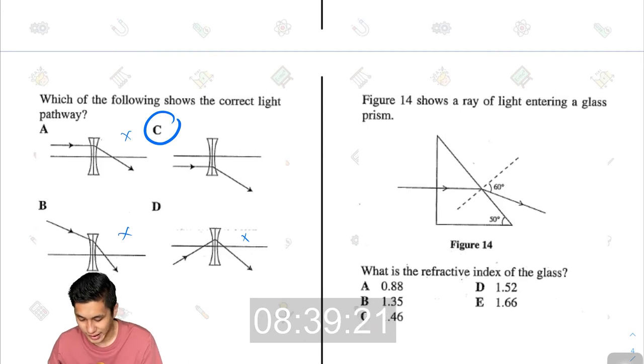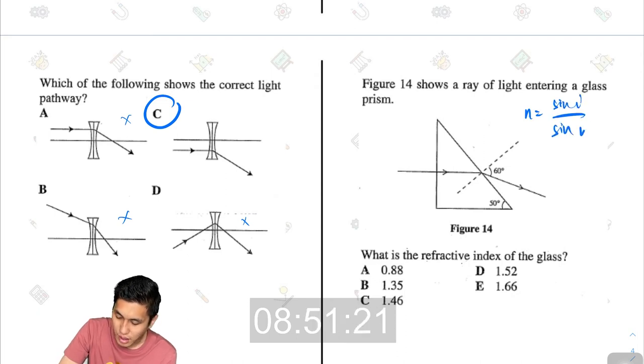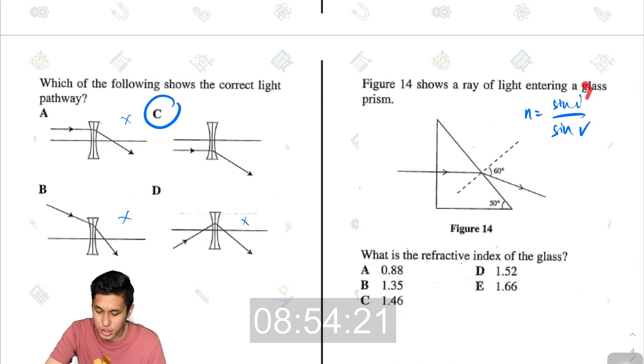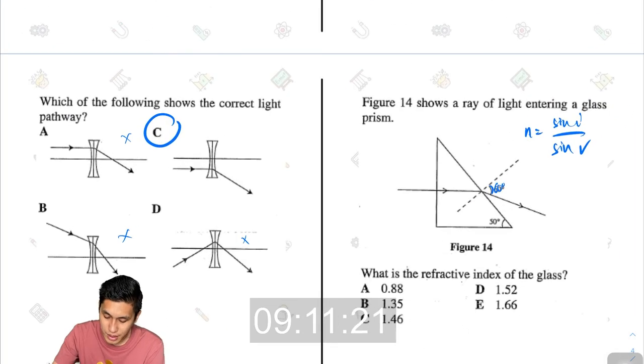Figure 14 shows a ray of light entering a glass prism. What is the refractive index of the glass? Refractive index can be calculated as n equals sin i over sin r. Whereby usually the angle on the top would be the angle in air, and the angle on the bottom would be the angle in the other medium. Remember angle must always be calculated from the normal itself. So 60 degree, that's the correct one. The 60 degrees would be up there. And here on the inside, as you can see from this angle, I can tell that this angle is also 50.